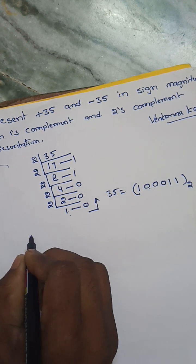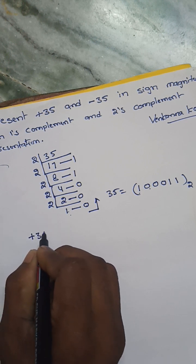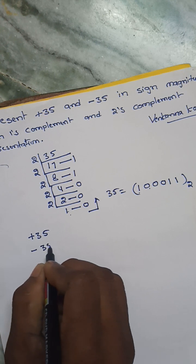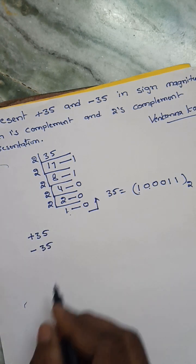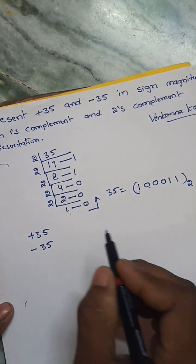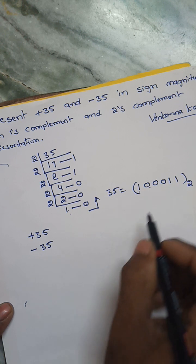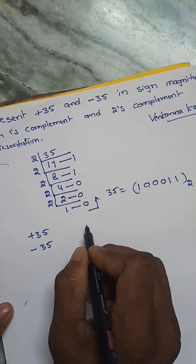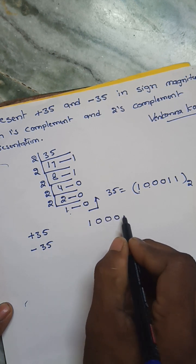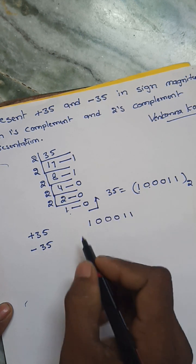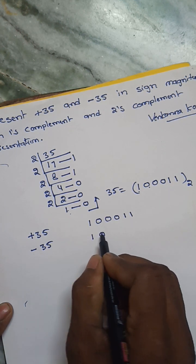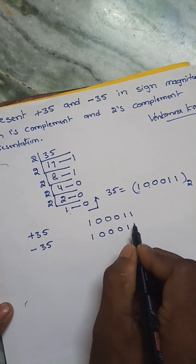So here, first, the plus 35 representation in sign-magnitude, and minus 35 representation. How to represent plus 35? That means first we have to write the binary representation for 35, that is 1, 0, 0, 0, 1, 1. And here also 1, 0, 0, 0, 1, 1.